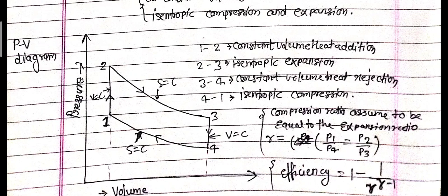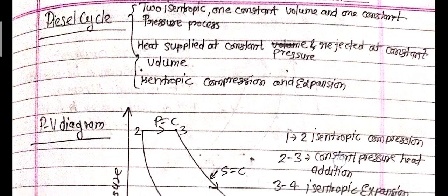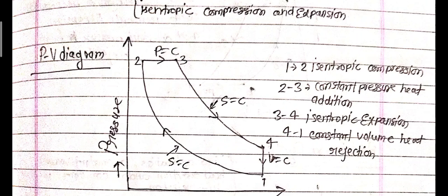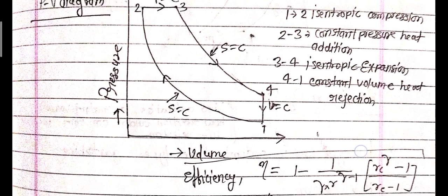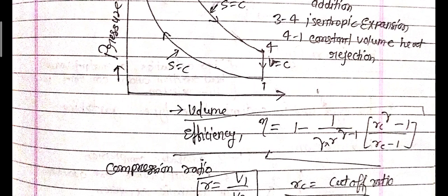In the Diesel cycle, two isentropic, one constant volume, and one constant pressure process occur. Heat is applied at constant pressure and rejected at constant volume. As shown in the PV diagram: process 1 to 2 is isentropic compression, process 2 to 3 is constant pressure heat addition, process 3 to 4 is isentropic expansion, process 4 to 1 is constant volume heat rejection.